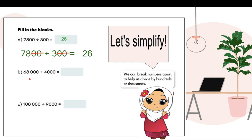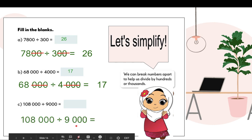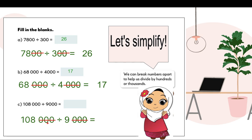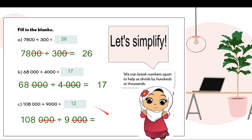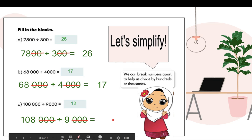Next example: 68,000 divided by 4,000. Chop off three zeros in the divisor, and do the same in the dividend. So 68 divided by 4 is equal to 17. Next: 108,000 divided by 9,000 — chop off three zeros from each. So 108 divided by 9 is equal to 12. Therefore, 108,000 divided by 9,000 is simply 12. This concludes our lesson about dividing whole numbers by 10, 100, 1,000, and their multiples.